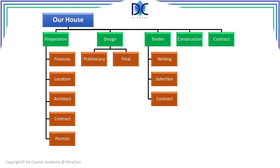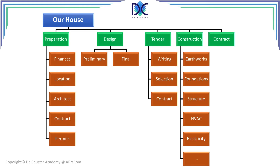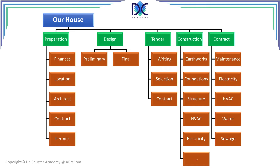The construction itself includes earthworks, foundations, structural works, heating, ventilation, air conditioning, electricity, and many other things you can imagine. At the end, the contract phase involves maintenance of what we built, electricity contracts, heating, ventilation, air conditioning, water, sewage, and perhaps other contracts you have to foresee — for example, contracts related to a swimming pool if you have one.